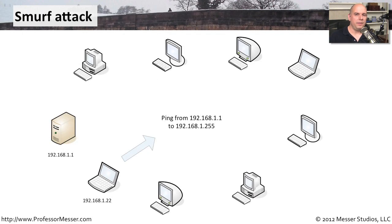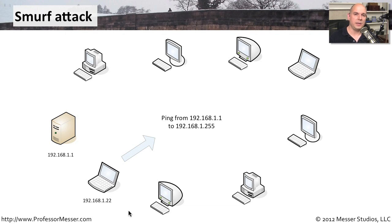One of the very first distributed denial of service attacks was called the Smurf attack. This goes way back — it's hard to even find a network susceptible to this any longer. But it was a good description of how denial of service attacks could really disrupt the network. It was a relatively simple distributed denial of service attack because it used something that everybody had available.